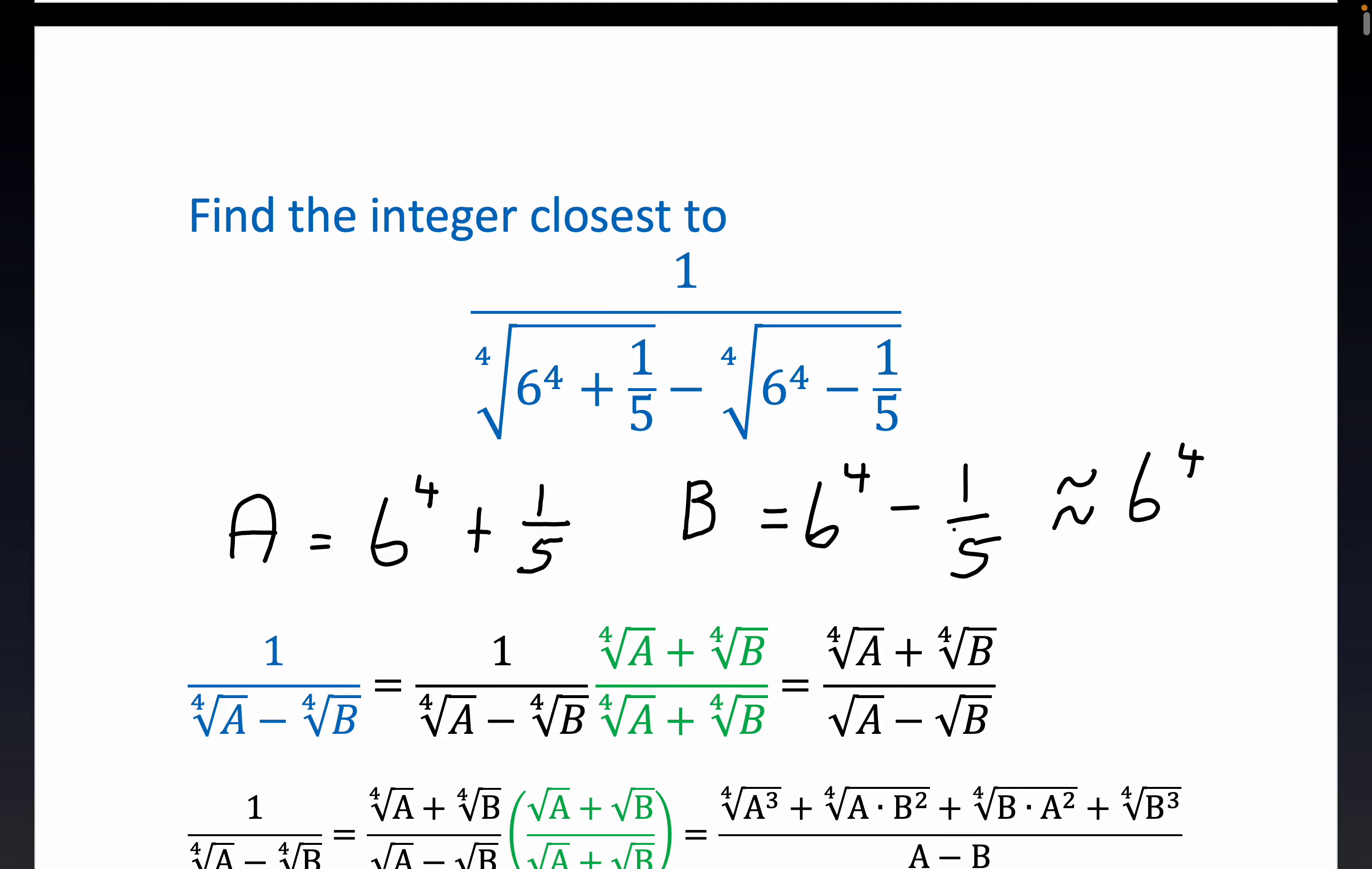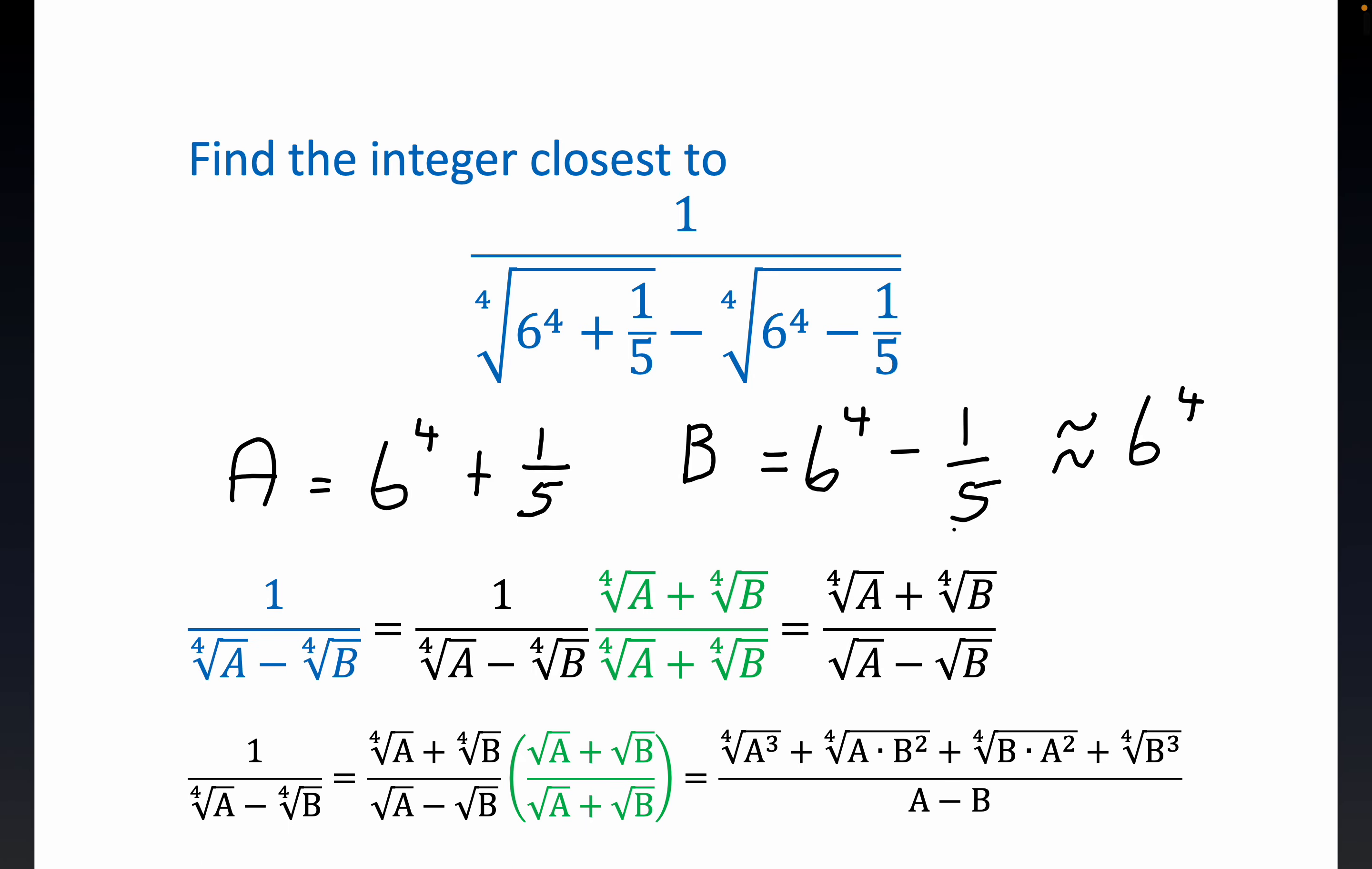So what we're going to do right here is, the beginning problem, this problem that we're trying to find the integer which it's closest to is this form. And we multiply through by the conjugate of the denominator which exploits the difference of two squares formula.